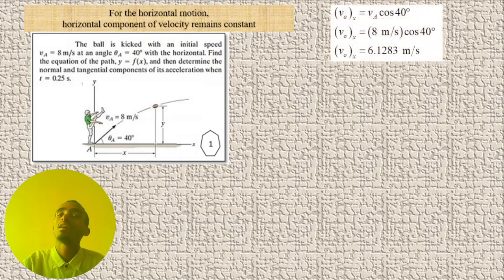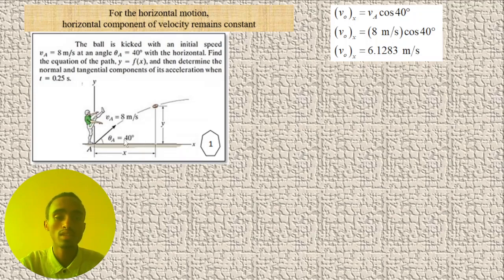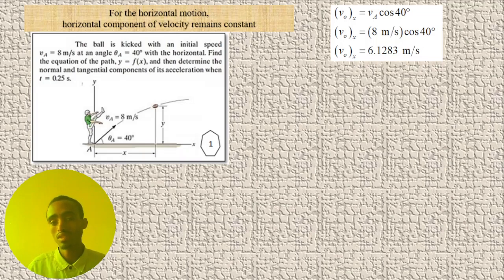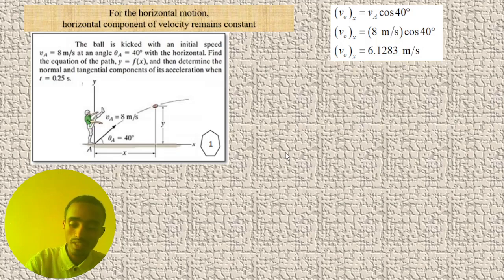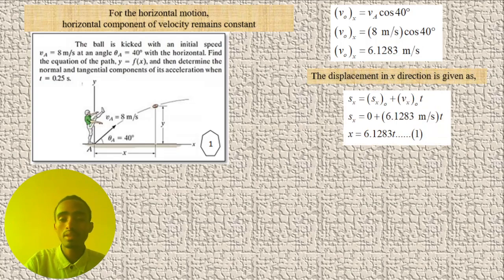The horizontal velocity is v₀ cosθ. The initial velocity is 8 meters per second at 40 degrees, giving two components: in the vertical direction, v₀ sinθ, and in the horizontal direction, v₀ cosθ. Substituting the values, the horizontal velocity v₀ₓ equals 6.128 meters per second.